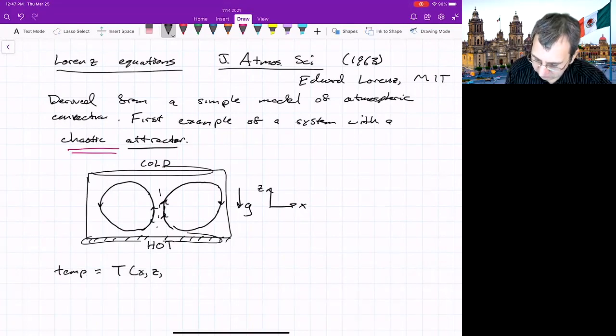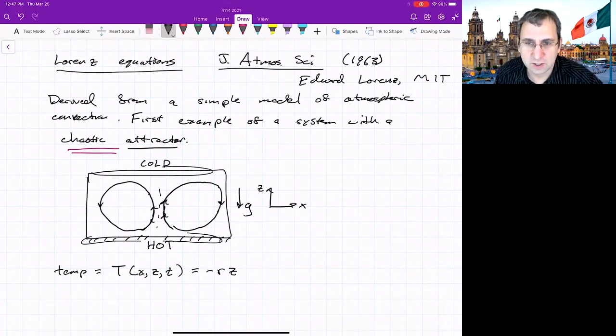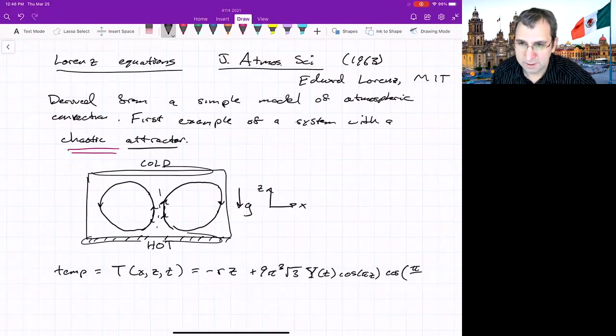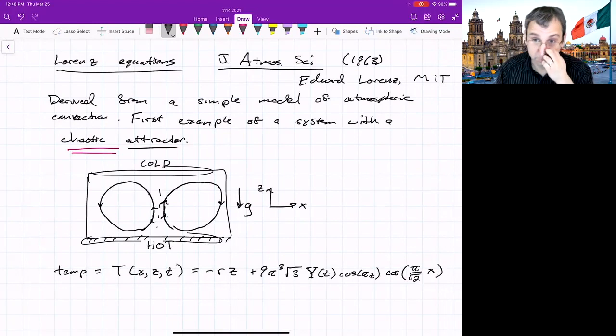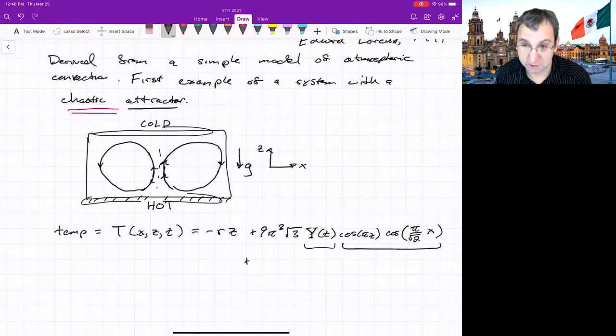And then he includes just the simplest Fourier modes. The next mode, this is 9π to the third square root of 3, and then a capital Y as a function of time, which will be like an amplitude for the temperature, cosine πZ, cosine π over square root of 2 X. That's a Fourier mode in X and Z. So the temperature would be solving some PDE, and one way to solve a PDE is you break it into a part that's dependent on time, so time dependent amplitude, and then like a spatial mode. So that's the first spatial mode.